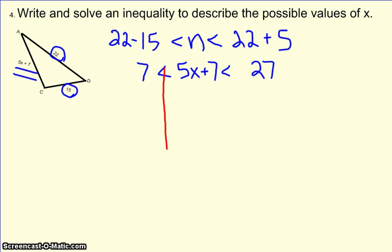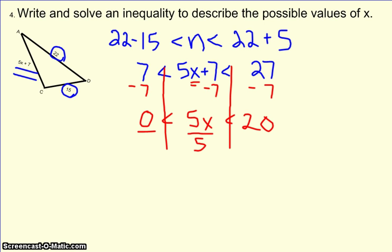So what I have right here is basically two equations I have to solve. To get this x alone, I'm going to subtract 7 from all three sides. So I end up with 0 is less than 5x, which is less than 20. Then to get the x alone, I'll divide everything by 5. So I have 0 is less than x, which is less than 4. So that is telling me that x can be somewhere between 0 and 4 to make this triangle work.